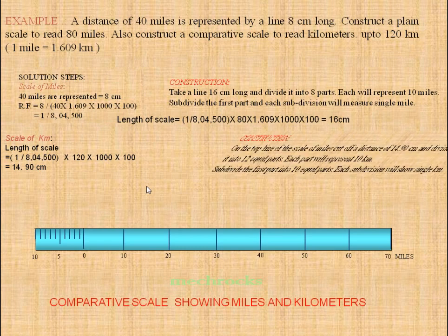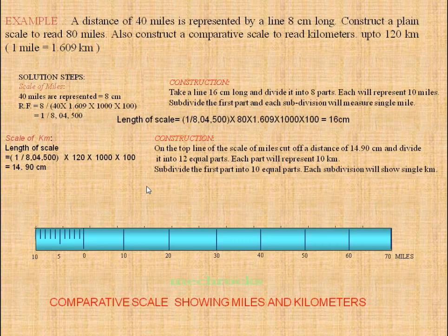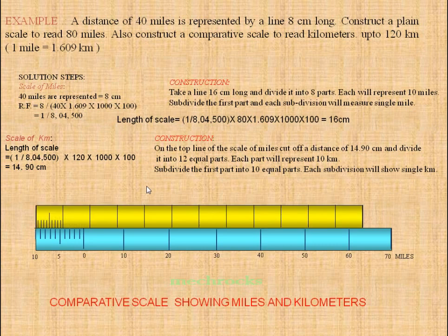We take a 14.9 cm line and divide it into 12 equal parts; each part represents 10 kilometers. Divide the first division into 10 equal parts; each small division represents 1 kilometer.